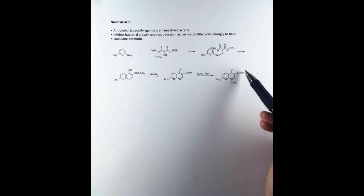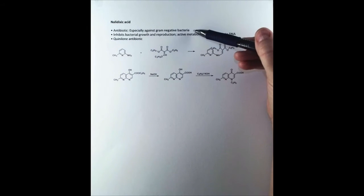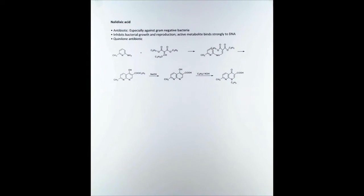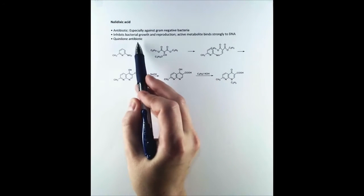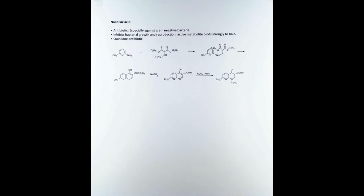Next up we have nalidixic acid. This is an antibiotic that is especially effective against gram-negative bacteria. It inhibits bacterial growth and reproduction by binding to their DNA. So the active metabolite that's produced from this compound will bind strongly to the DNA, but reversibly. It is a quinolone antibiotic because of this ring structure.